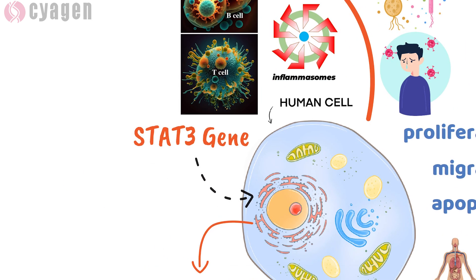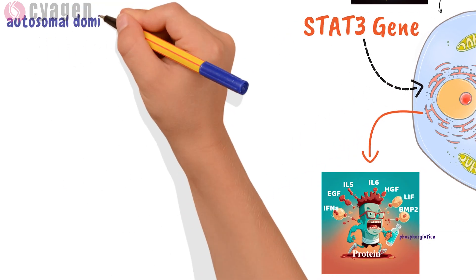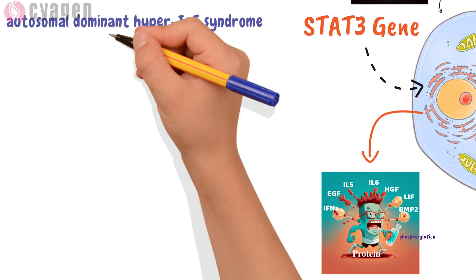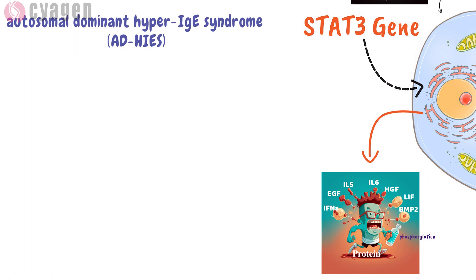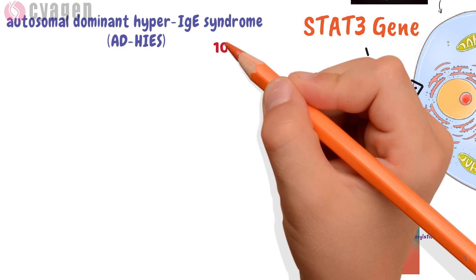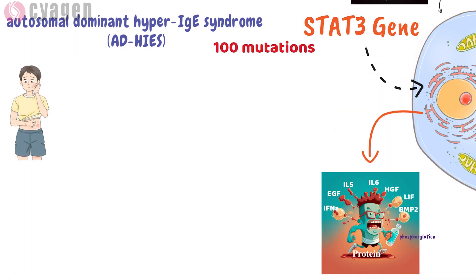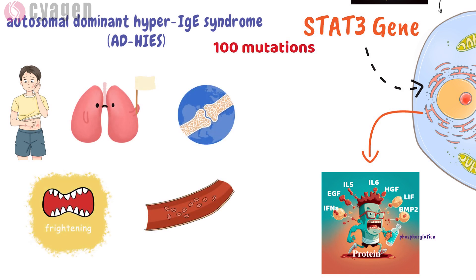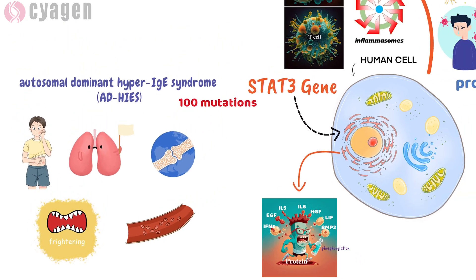Individuals with autosomal dominant hyper-IgE syndrome have more than 100 identified germline mutations in the STAT3 gene, which results in recurrent skin and lung infections, bone and teeth irregularities, and blood vessel abnormalities due to immune system dysfunction.